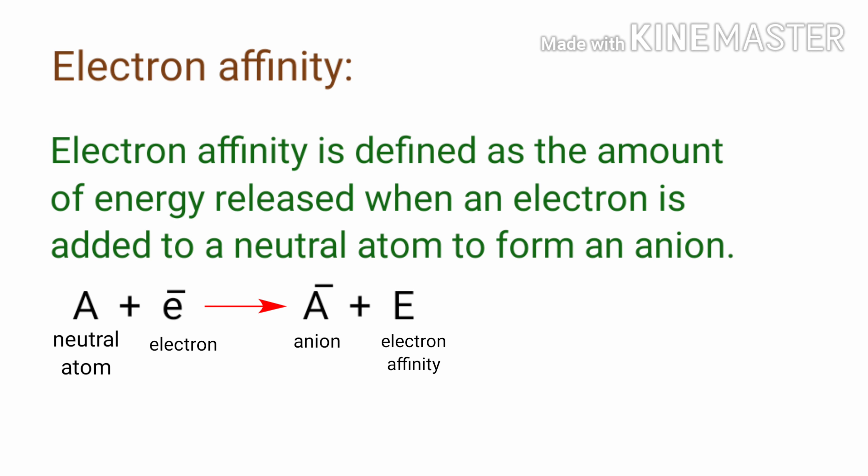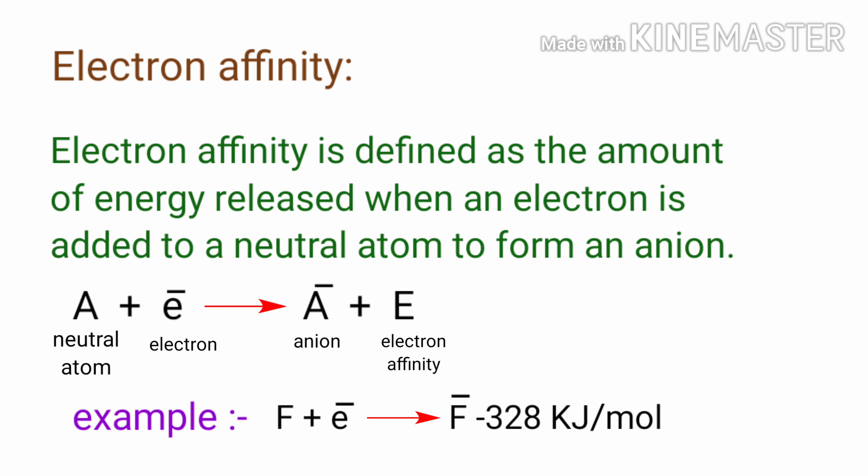Electron affinity is defined as the amount of energy released when an electron is added to a neutral atom to form an anion. For example, when a fluorine atom in a gaseous state gains an electron to form a fluoride ion, the associated energy change is minus 328 kilojoules per mole. Negative energy means energy is released.